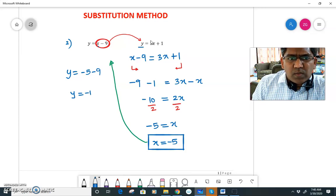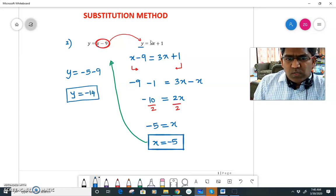So I got both the values: x equal to minus 5 and y equal to minus 14. So these are the values which are satisfying both the equations. So these are my solution.